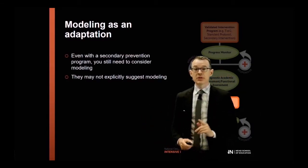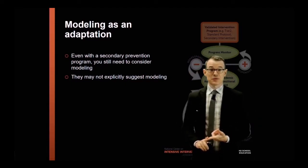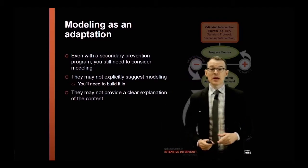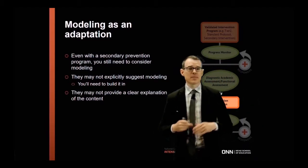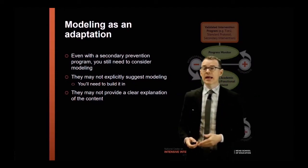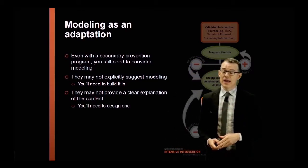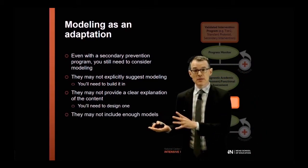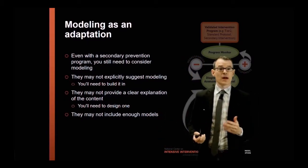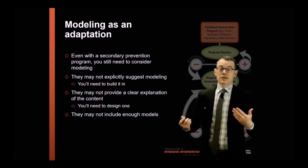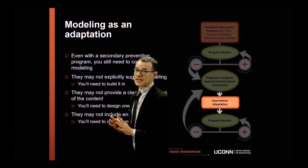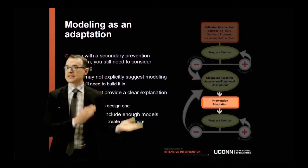We're focusing on secondary prevention programs, but even when you do that, it's often the case that the program itself is not giving you enough support in terms of doing good models. So you still need to consider modeling because: one, they may not explicitly suggest it or build it in very clearly; two, they may not provide you with a clear explanation of the content — they may give you some language, but not exact wording. And they might not include enough models, leaving you to figure out the rest for yourself, particularly if the skill is complex.